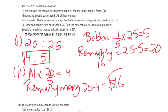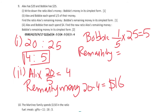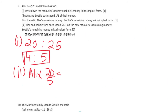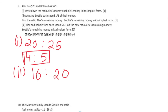Bobby has $25 minus $5 remaining, which is $20. So we have $16 for Alex and $20 for Bobby, giving a ratio of 16:20. Divide both sides by 4 and we get 4:5.